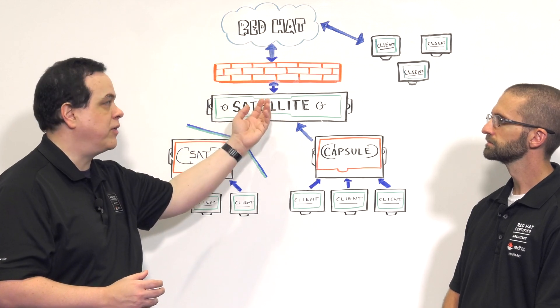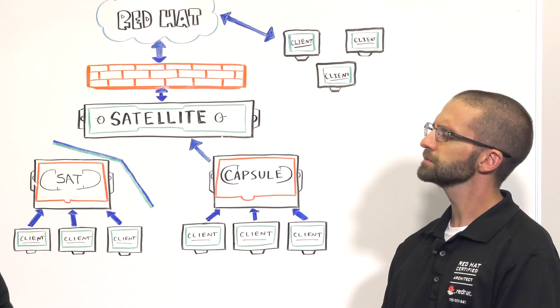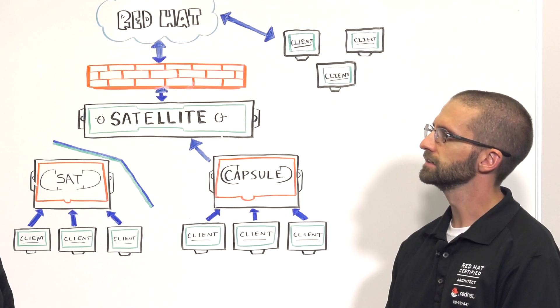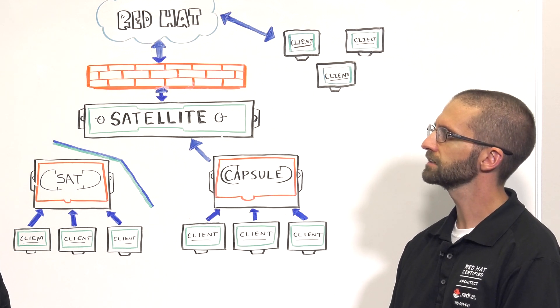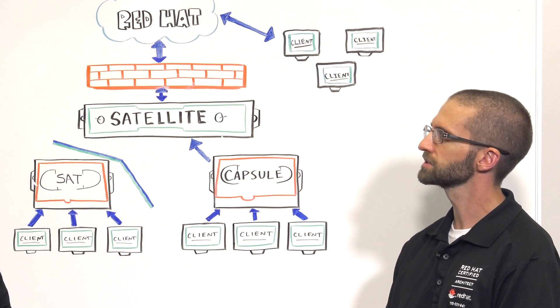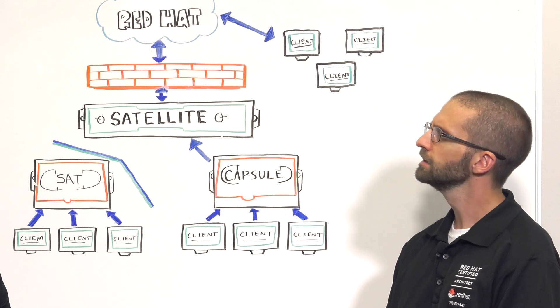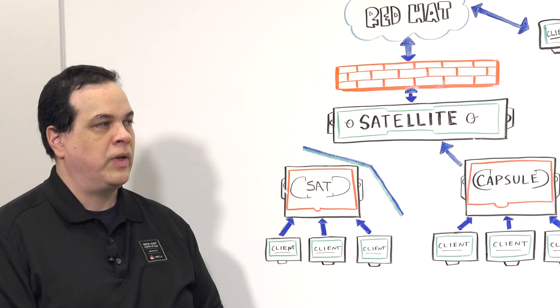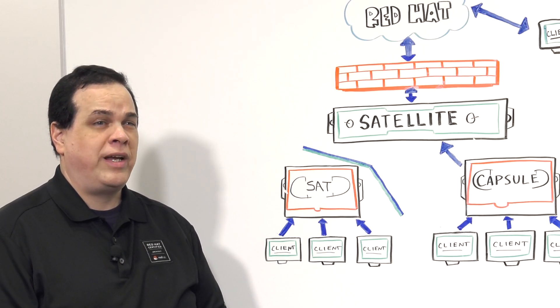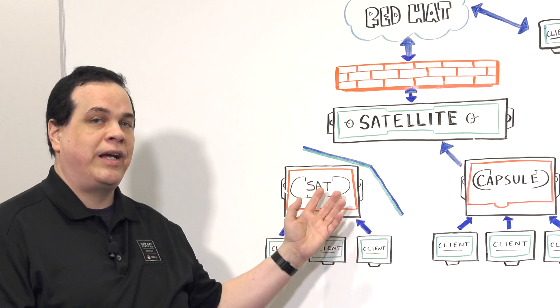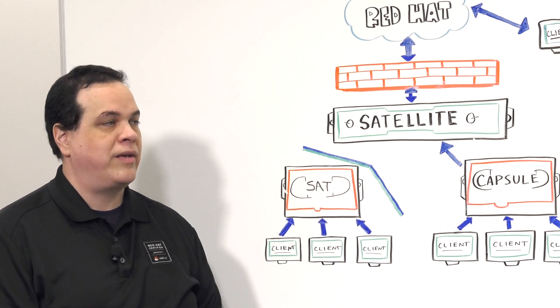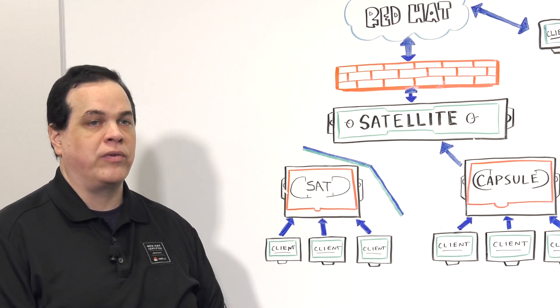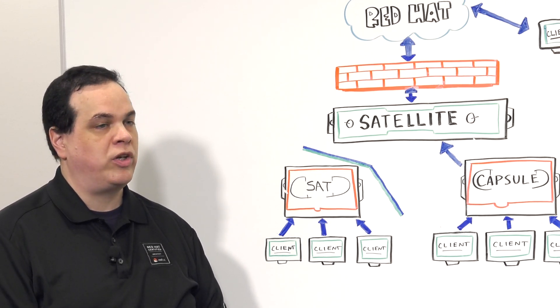And then the results are returned back to your satellite server. My customer has some clients which are disconnected, and others get their content from a satellite that gets its content from a master satellite using inter-satellite sync. Can those systems use Insights? Unfortunately, as of 2018, disconnected, air-gapped, and other complex satellite setups are not supported by Insights. However, we're constantly evolving the product, so work with the Red Hat team to see what's changed.